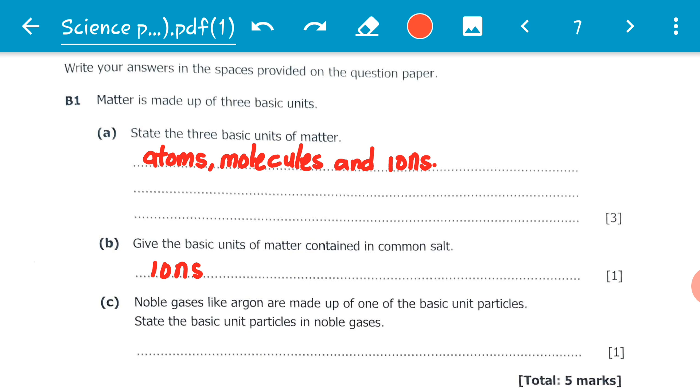these gases existing as atoms. So in noble gases we only find atoms. We don't find molecules, we don't find ions, we only find atoms. So the answer to question C is atoms. A relatively easy question to kick start the revision series.